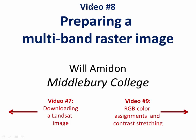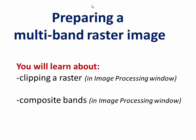Hi everybody, welcome to video number eight. In this video I'm going to show you how to take the Landsat bands that you just downloaded and stack them into a single multiband raster image. To do that we're going to use a tool in ArcMap called the Image Processing Window, which will let us first clip all of these bands together very quickly and then composite them back into a single multiband file.